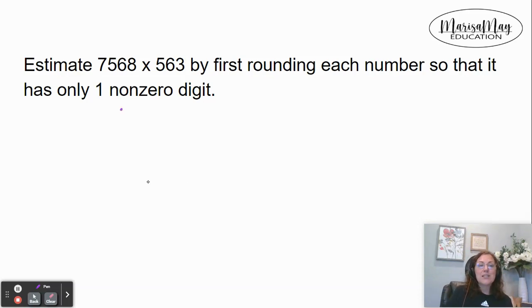So for instance, when I'm rounding 7,568, the highest place value is the thousandth place. When I'm rounding 563, the highest place value is the hundredths place.